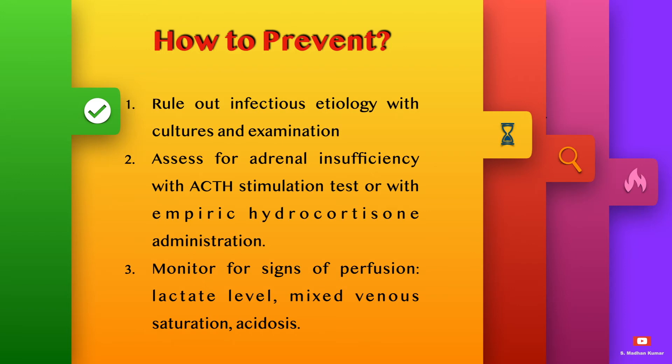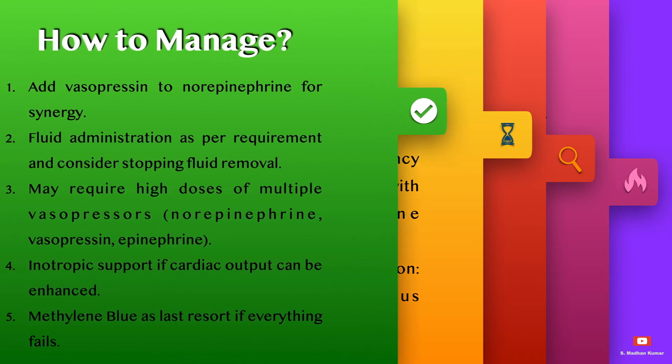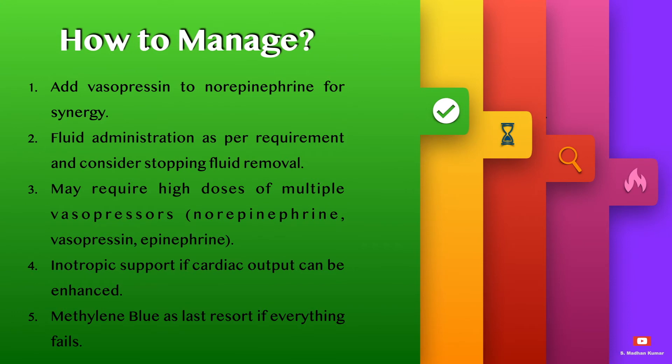Monitor for signs of perfusion like lactate levels, mixed venous saturation, and for acidosis in the ABG. Management includes adding vasopressin to norepinephrine for synergy, fluid administration as per requirement, and consider stopping fluid removal to maintain hemodynamic status.